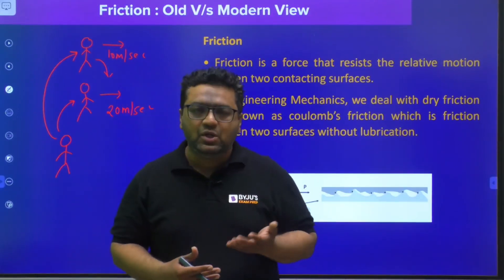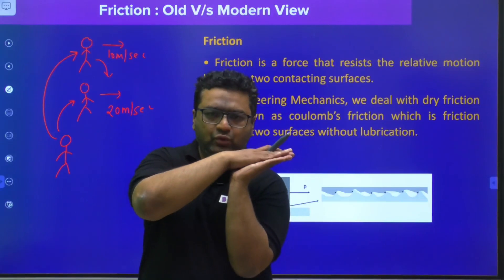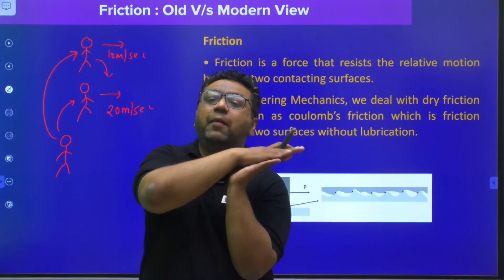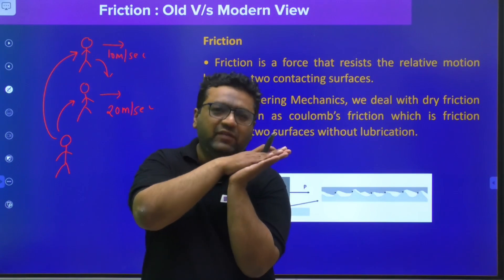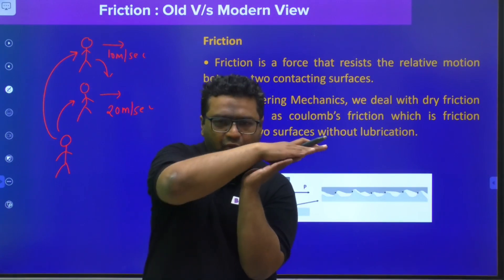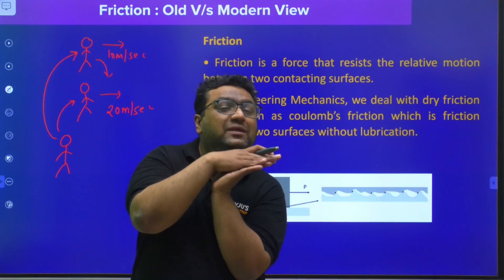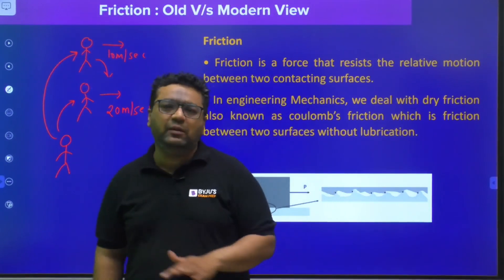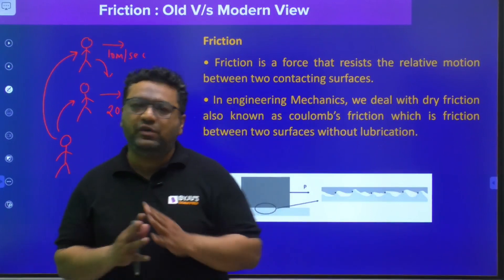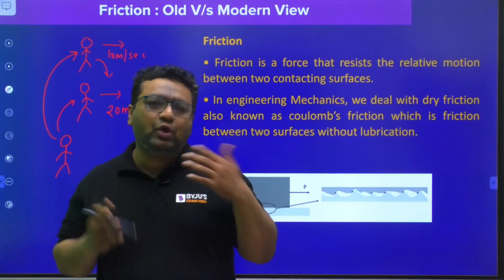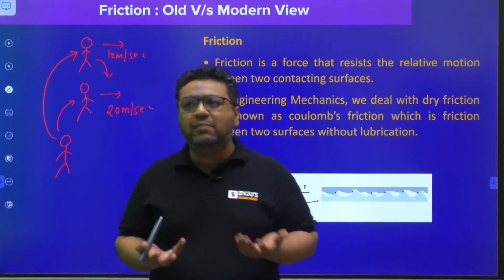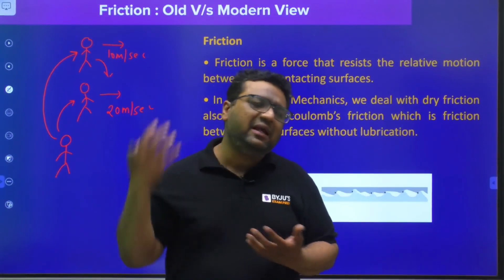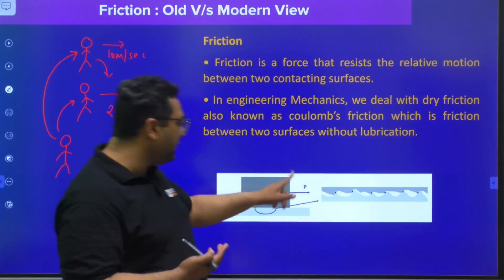If there are two bodies together and one body tries to move, friction will come into picture to stop the relative motion. Friction will try to stop the moving body and also try to move the second body so that they can move together. The question now is: what is the cause of friction? There were two views about this, as our thinking has been modified over time. Previously, our thinking about friction was something different.